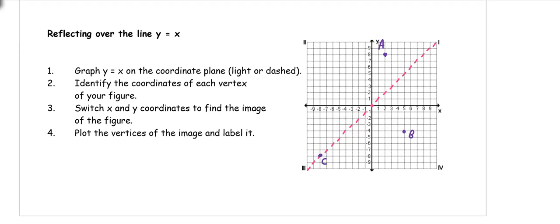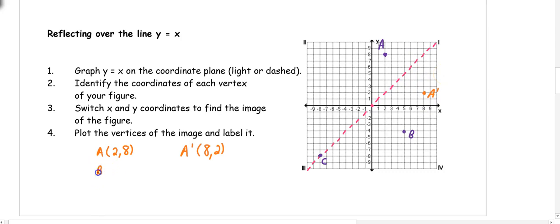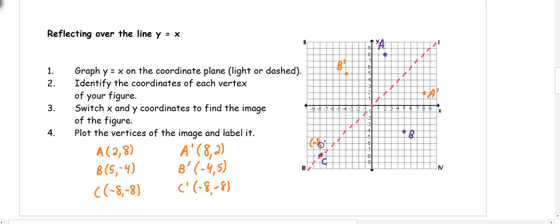To reflect over y equals x, identify the coordinate and switch the x and y values — keeping the same signs. A is at (2, 8), so A prime is (8, 2). B is at (5, -4), so B prime is (-4, 5). C is at (-8, -8) — it's on the line of reflection, so anytime a point is on the line of reflection, it stays in the same spot at (-8, -8).